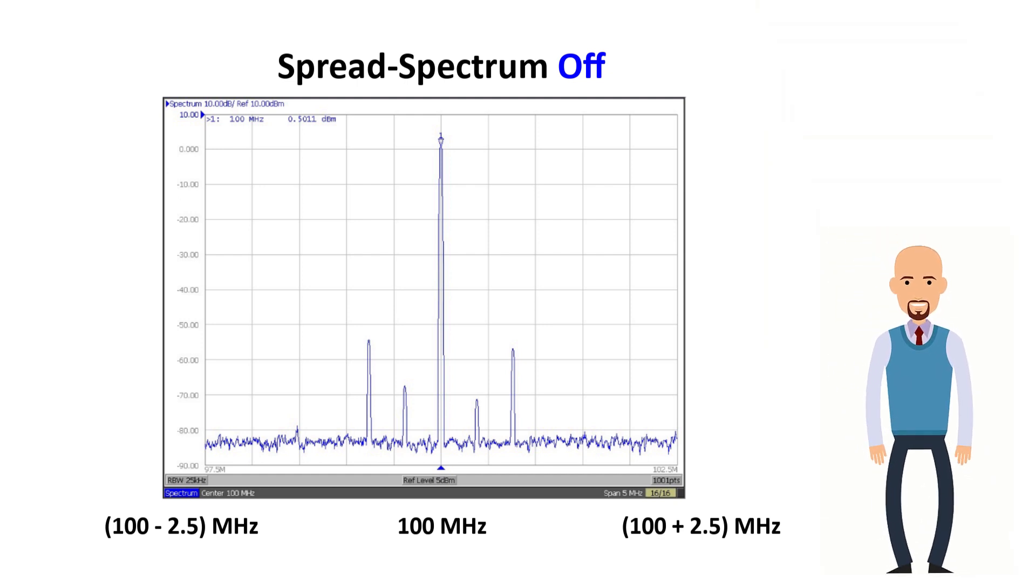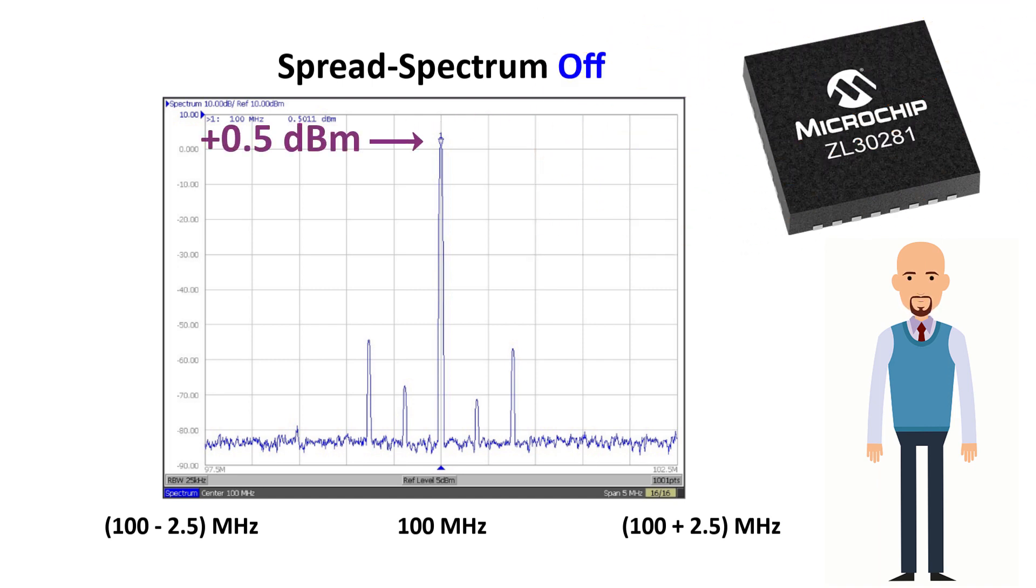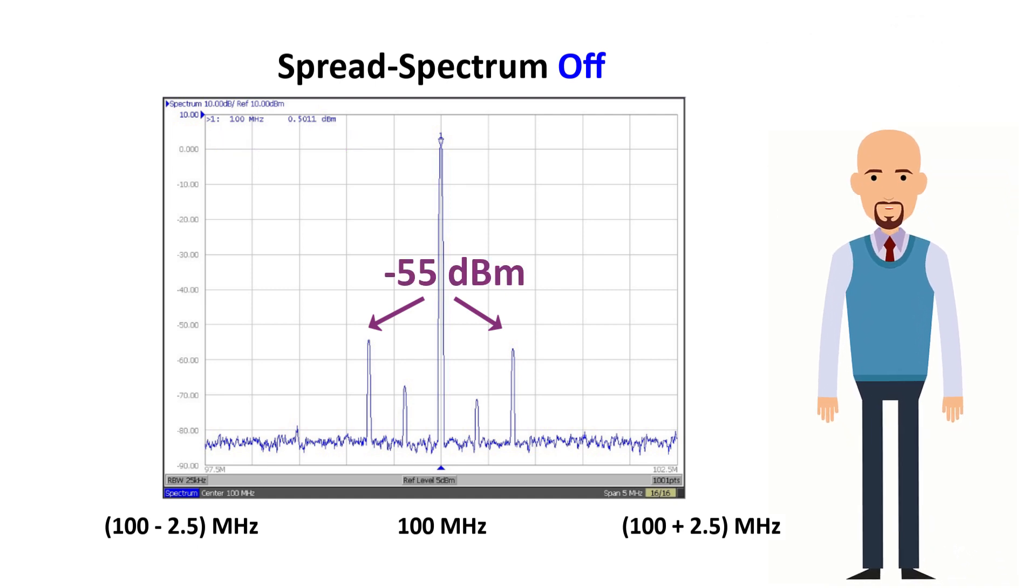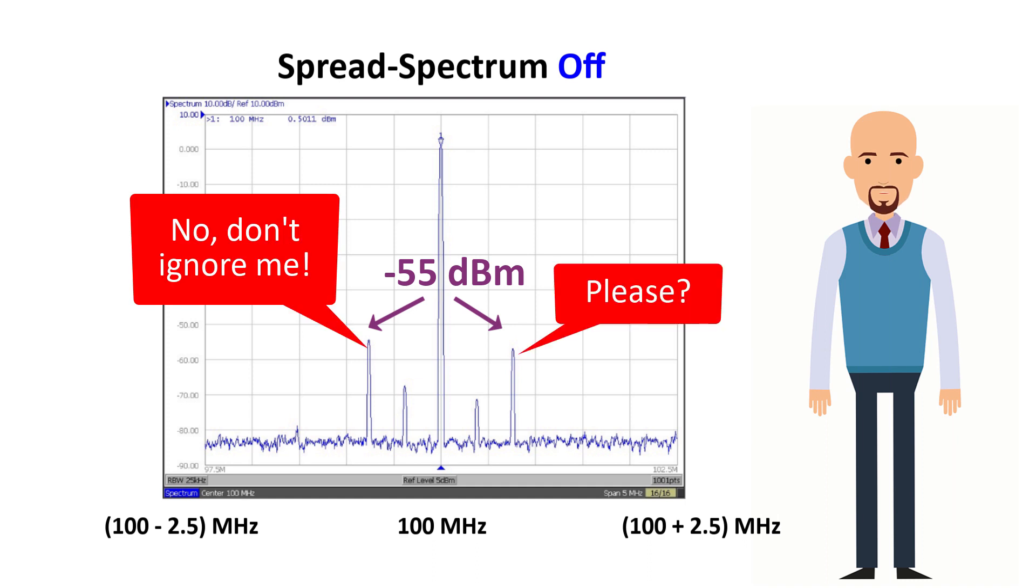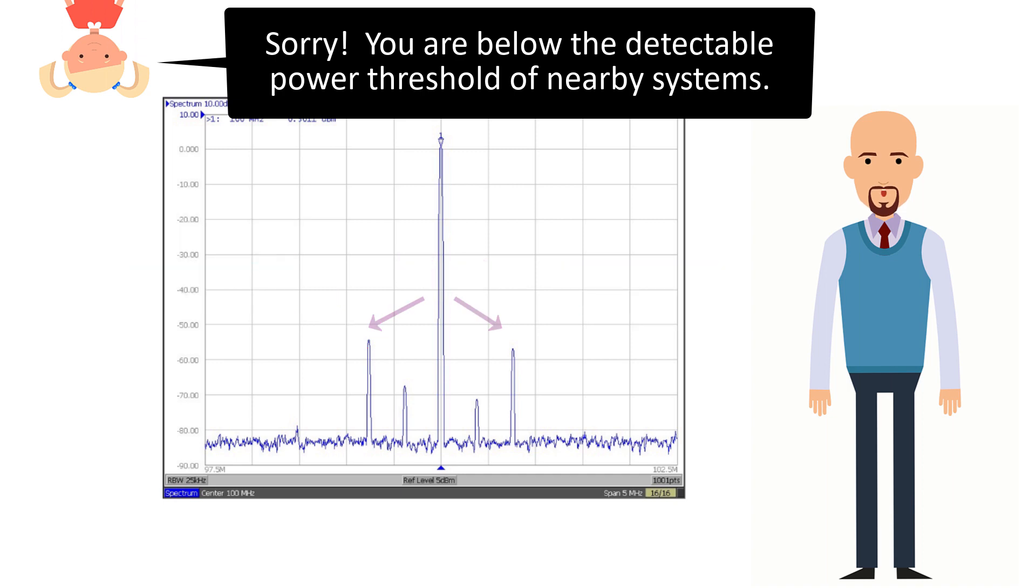This plot shows a narrow band of the spectrum about 2.5 MHz above and below the 100 MHz carrier. The power amplitude at that frequency is 0.5 dBm or so. The next highest power peaks are located approximately 0.75 MHz on either side of the carrier. Because the amplitudes of these are significantly lower, these smaller power peaks can be ignored for the purposes of this discussion. In other words, they are below the detectable threshold of nearby systems.